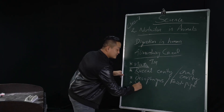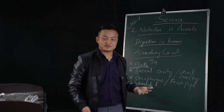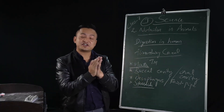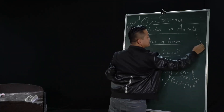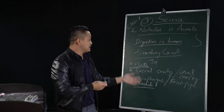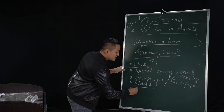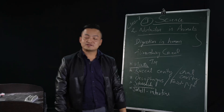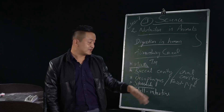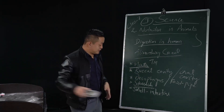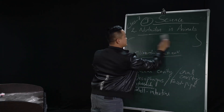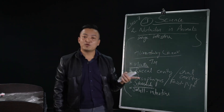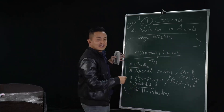Next will be the stomach. Our stomach is actually a flattened J-shape. After the stomach, the next is small intestine. We have two intestines — small intestine and large intestine. Large intestine ends in the rectum, and large intestine comes after the small intestine.